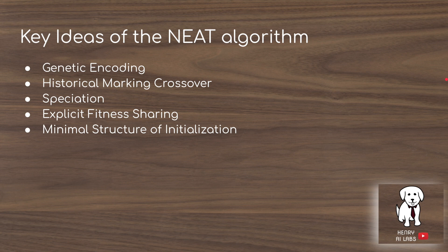The key ideas of the NEAT algorithm are: the genetic encoding, where neural networks have a phenotype and a genotype. The genotype is the underlying encoding used in crossover and mutation, and the phenotype is the resulting neural network used in evaluation. The next key idea is the historical marking technique that allows for crossover between neural network architectures. Then there is the speciation technique that allows adding complexity to be rewarded later on, similar to how biological niches are formed — neural network topologies niche themselves and only compete within their niche, via explicit fitness sharing.